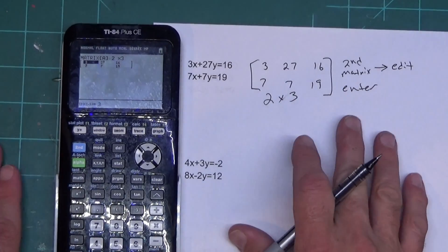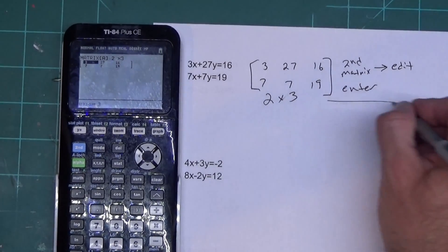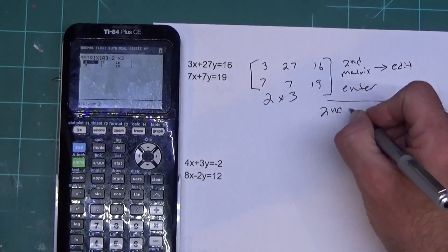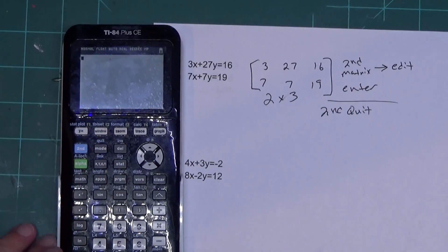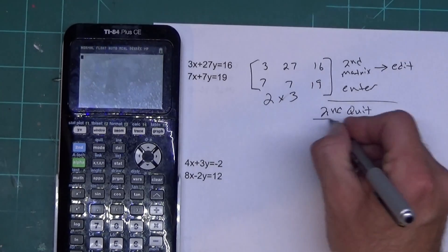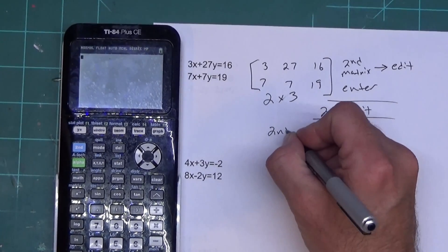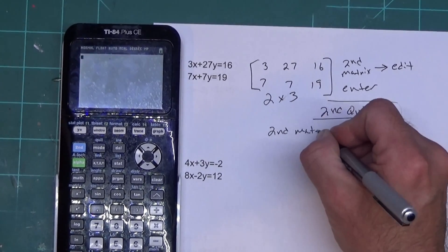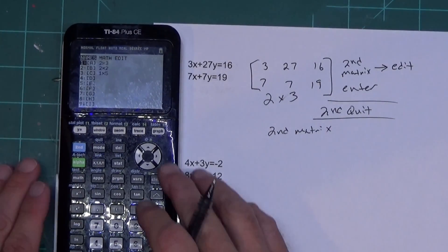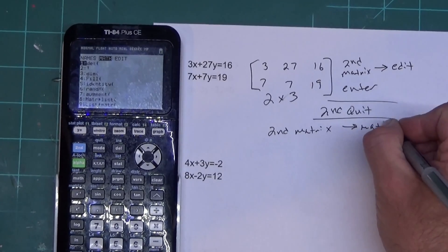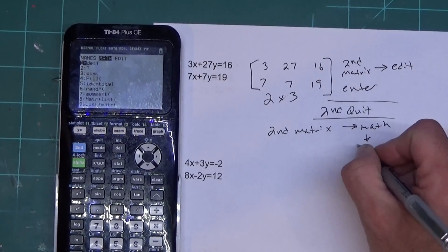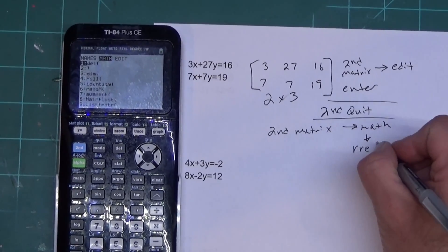Now I have the whole thing typed in. Once you're done typing it in, you're going to hit second quit. Then what we're going to do is hit second matrix again. This time we go over to math.